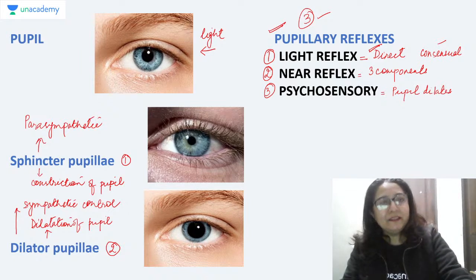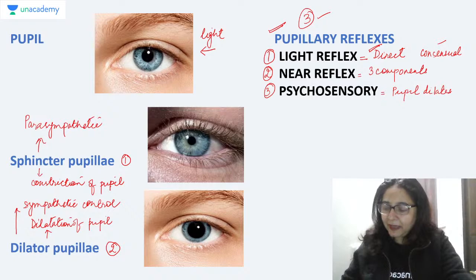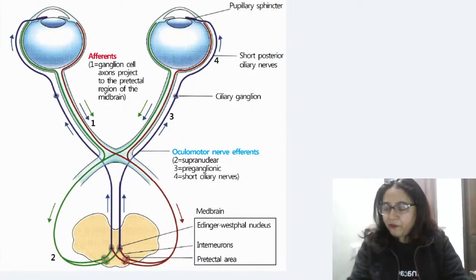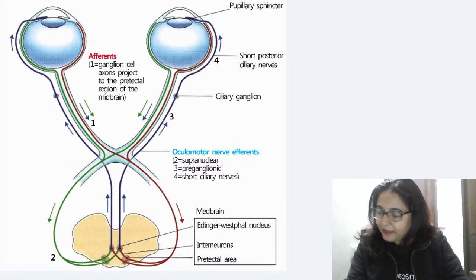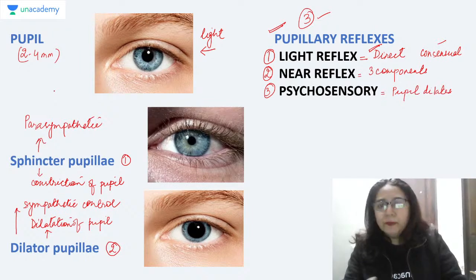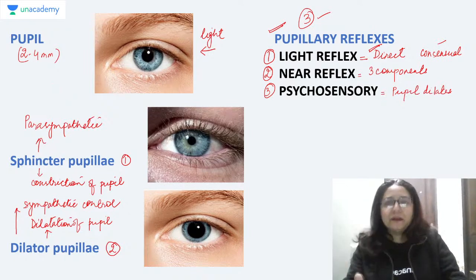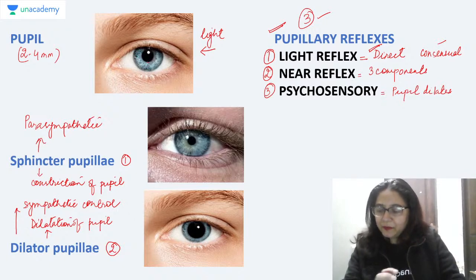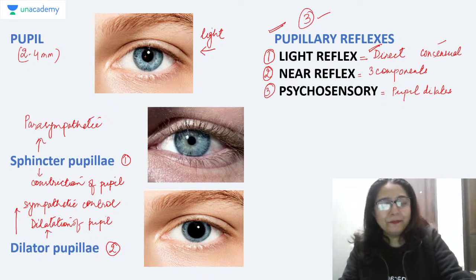Now, regarding normal pupil size: mid-dilated should not be considered normal. The normal size of the pupil is usually between two to four millimeters. Mid-dilated means approximately five millimeters or so. So the normal pupil size is between two to four millimeters. Now let's discuss the pathway for the light reflex.